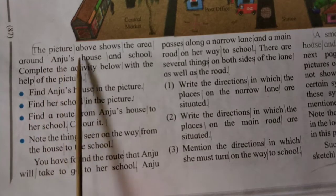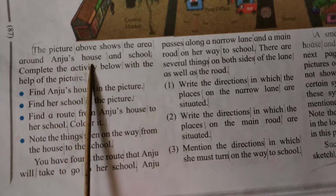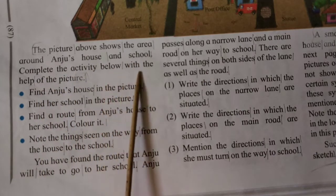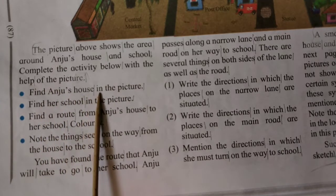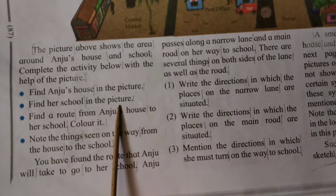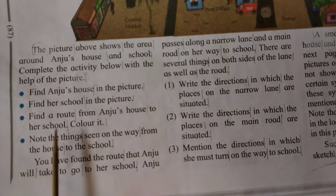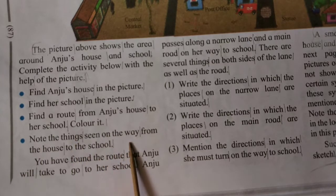The picture above shows the area around Anju's house and school. Complete the activity below with the help of the picture. Find Anju's house in the picture. Find a school in the picture. Find a route from Anju's house to the school and color it.